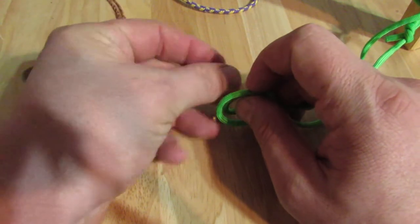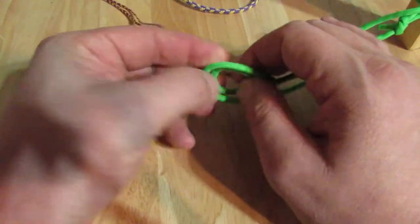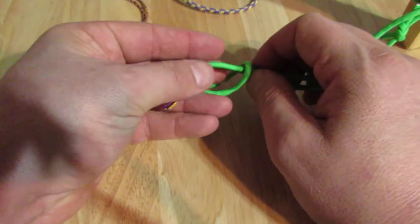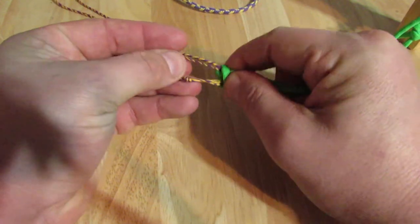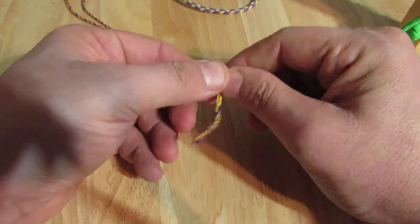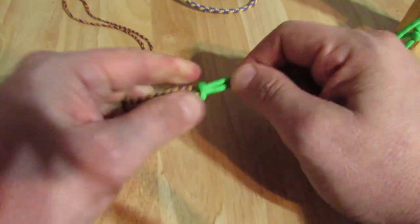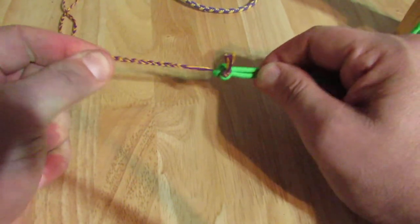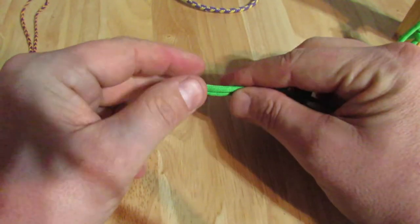You just put it through the braid or through the loop, cinch this nice and tight. Once it grabs onto that knot, that's all it needs. Now to undo this knot is really easy.